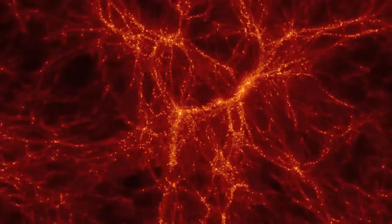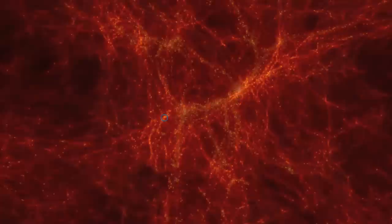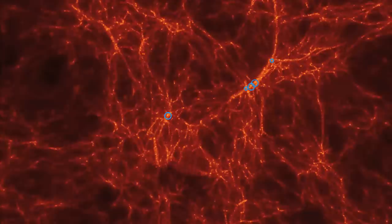The result? An intricate cosmic web, with gravity drawing matter into filaments and knots, like a vast tangle of interconnected spider's webs. Inside the densest regions is where the largest galaxies, and black holes, grew.